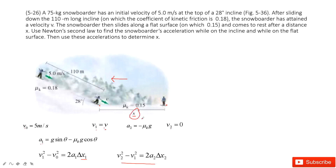Our strategy to find x has two steps. Step one: find v1 using the slope segment — we know the initial velocity, we can find the acceleration, and we know the displacement. We use the kinematic equation to find v1. Step two: after v1 is known, we look at the person moving on the horizontal ground, find the acceleration a2, and use the kinematic equation to find displacement Δx2.